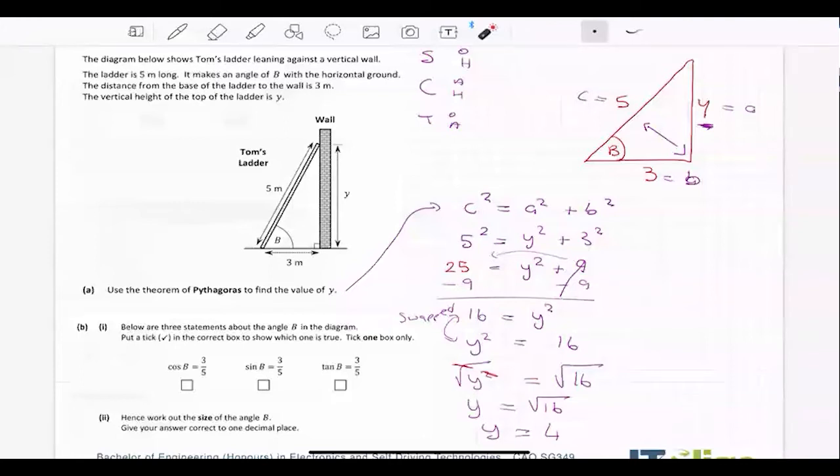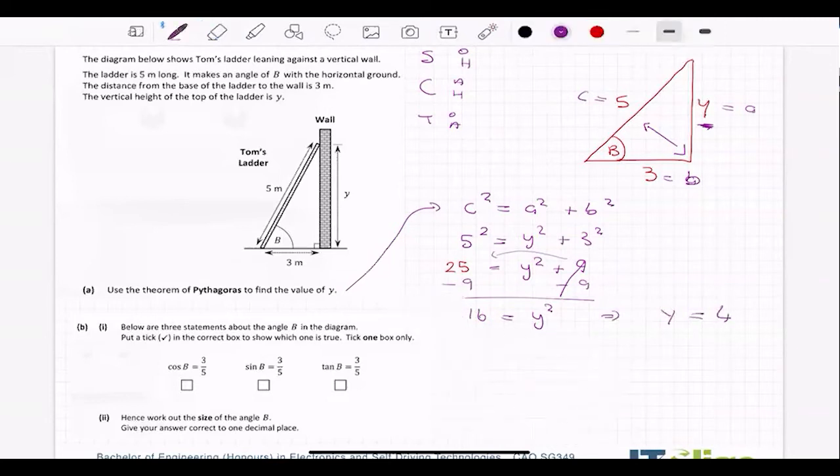So now we're on part B. So I'm just going to tidy up this one a little bit and just go Y is equal to four up there and clean off the bottom to give me some room. Below are three statements about the angle B in the diagram, put a tick in the correct box to show which one is true. Tick one box only. So what it's saying is cos B is equal to three over five, sine B is equal to three over five or tan B is equal to three over five.